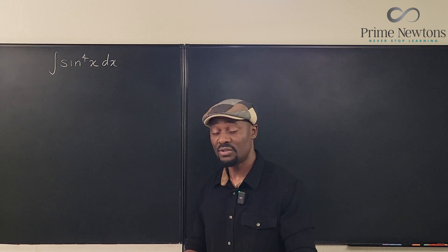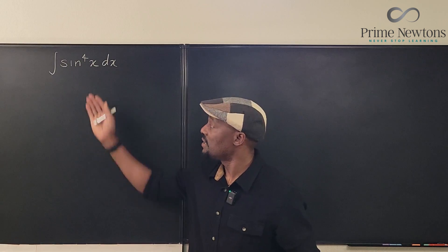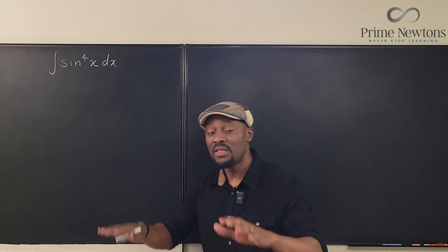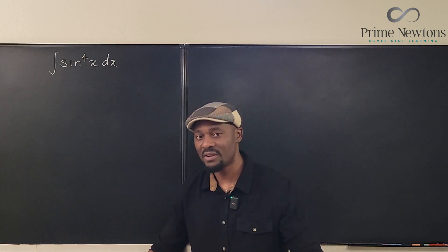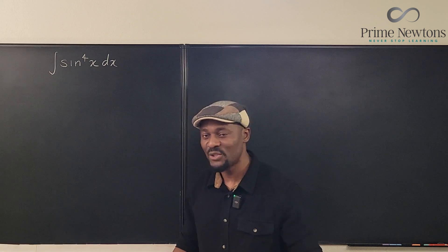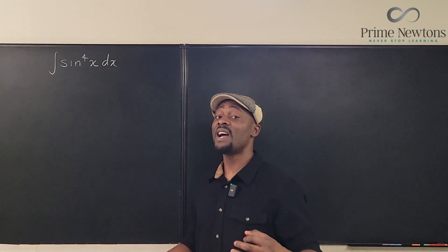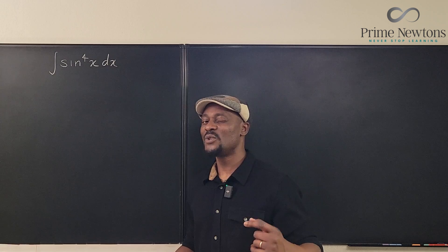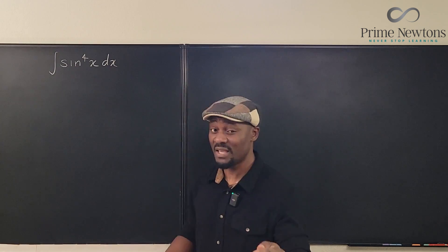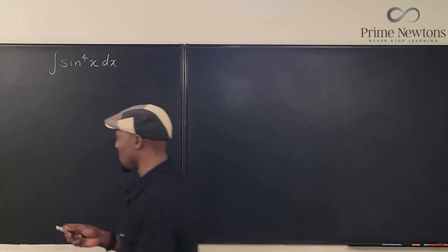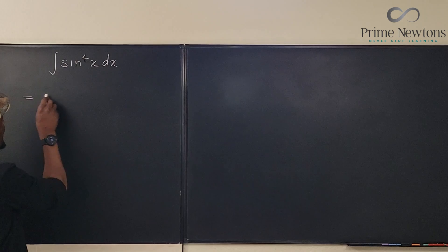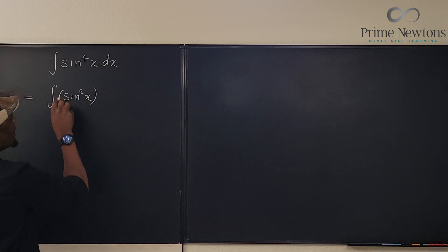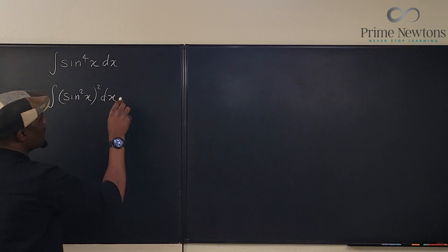The very first suggestion is: this power is too high, let's bring it low. Because the lower the power, the easier you'll be able to integrate. So instead of writing sine to the fourth, why not do sine squared squared? So we're going to say this is the integral of (sin²x)² dx.